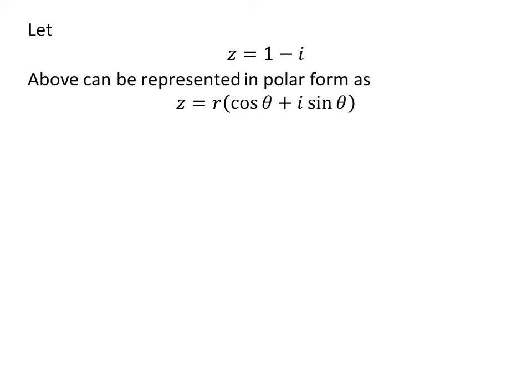Let us assume z equals 1 minus i. The complex number z can be represented in polar form as r times cosine of theta plus i times sine of theta.